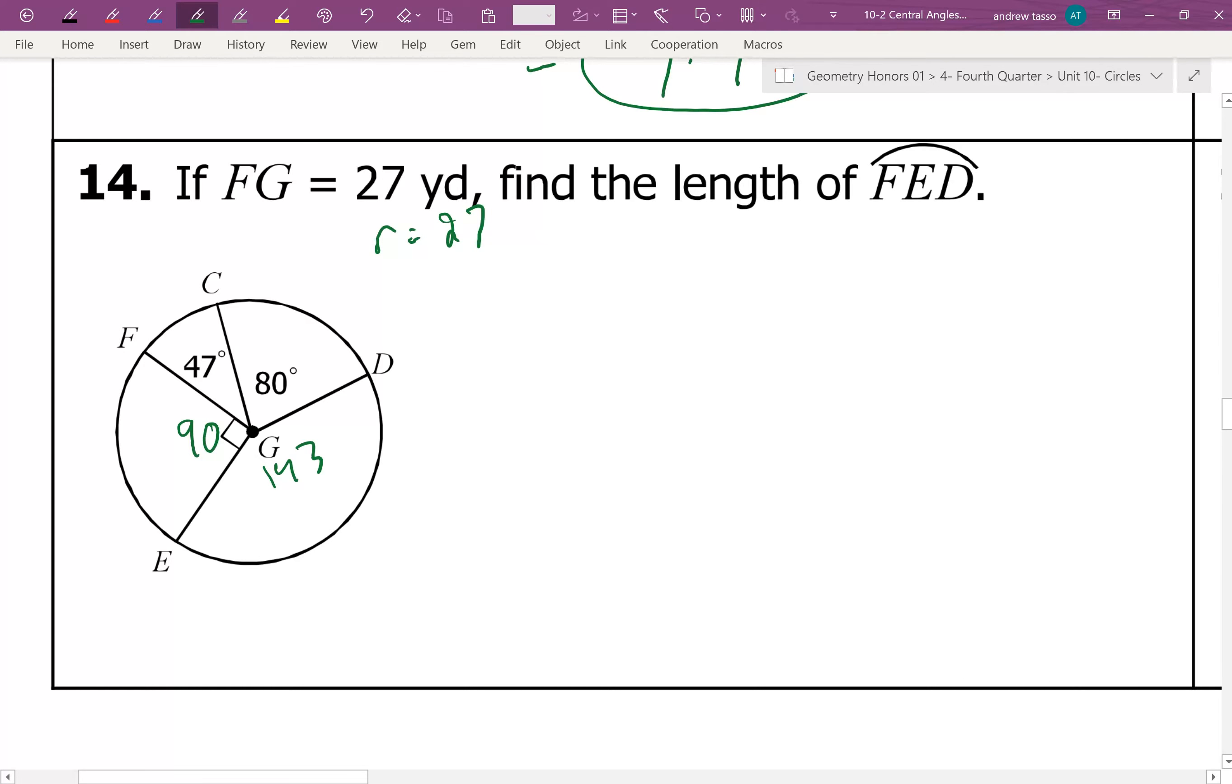Now we're looking for F, E, D, right? F to E to D. So if we find the measurement of the arc first, it would be 90 plus 143, which would be 233.